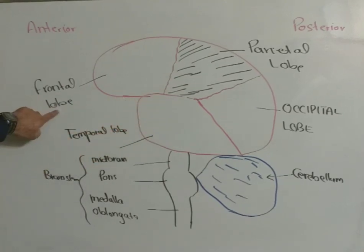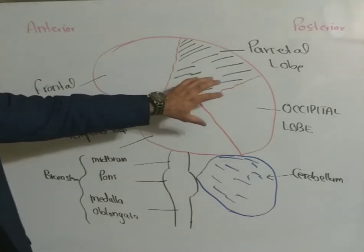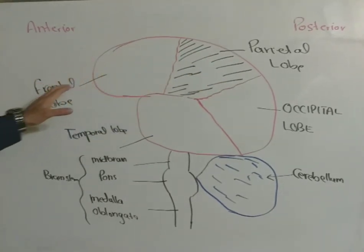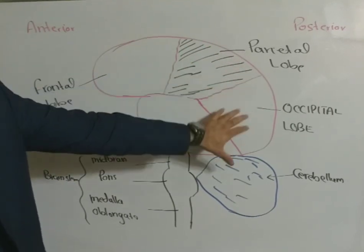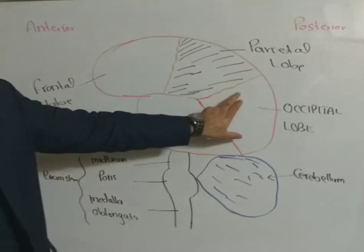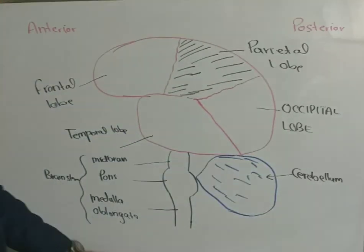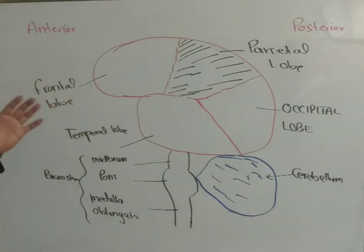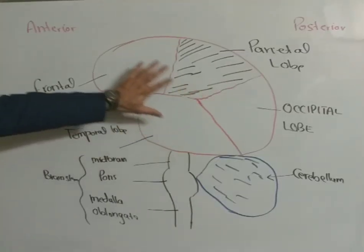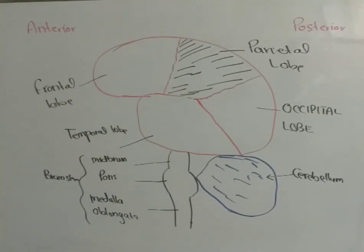The first is the frontal lobe, which is on the anterior side. Then comes the parietal lobe, which is posterior to the frontal lobe and superior to the occipital lobe. Underneath the parietal lobe, on the most posterior side of the brain, is the occipital lobe. And here is the temporal lobe, which is on the lateral aspect of the brain. So these are the four major lobes: frontal, parietal, occipital, and temporal.